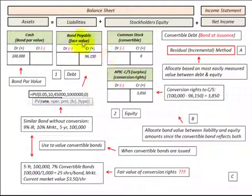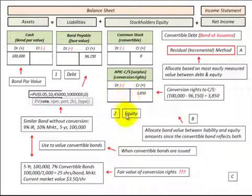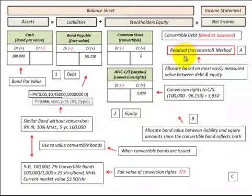We're going to try to measure — usually in this case — the debt portion first. We will determine what our debt portion is on this convertible bond, and then we can assign the equity amount. That equity amount is really the conversion rights of those bonds. So let's start out with the residual and incremental method and go through an example.